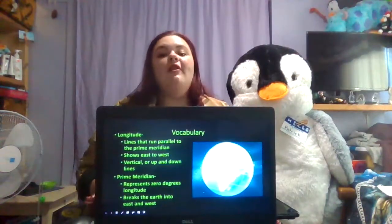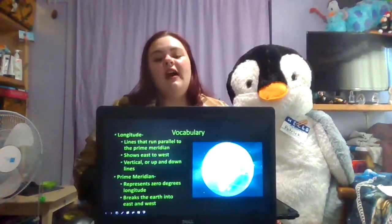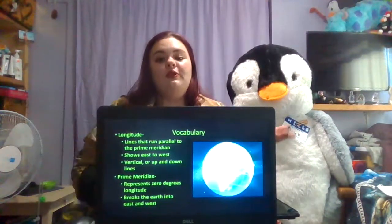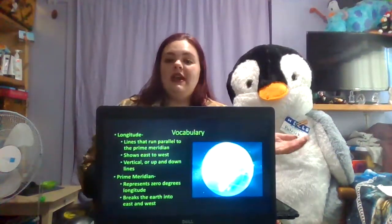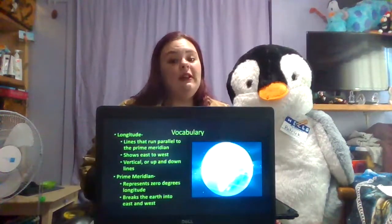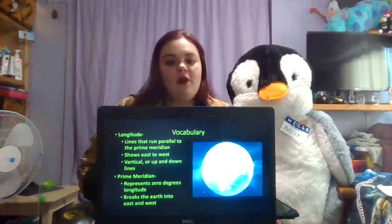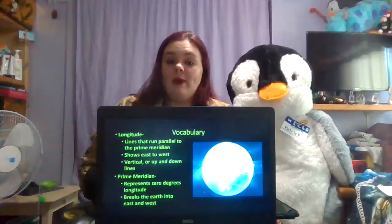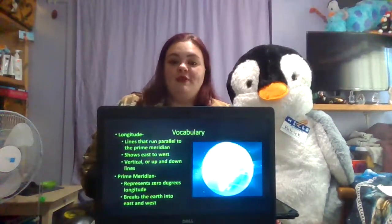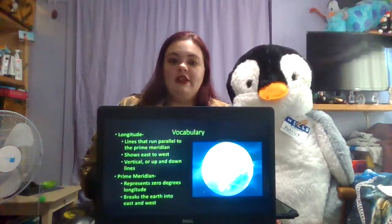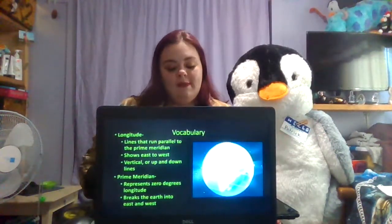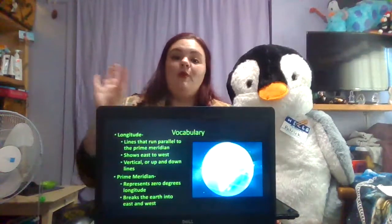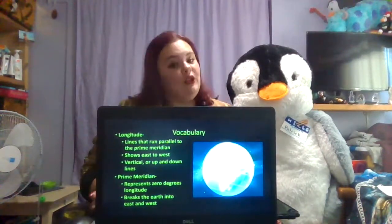Next we have longitude. These are the lines that run parallel to the prime meridian and they show east and west. They run vertically, or up and down, across the globe. The prime meridian represents zero degrees longitude and breaks the earth into east and west, shown on this map with the words 'prime meridian' written over Africa and Europe.